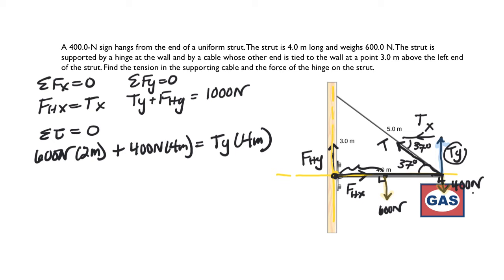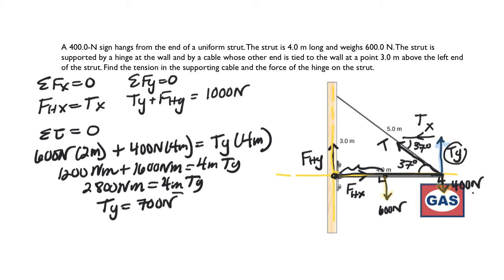And so let's see, what does this get us? 600 times two is 1,200 newton meters, plus 400 times four is 1,600 newton meters, equals 4 meters times TY. So this is 2,800 newton meters equals 4 meters times TY. That tells us that TY is 700 newtons. That's great. So we found that.